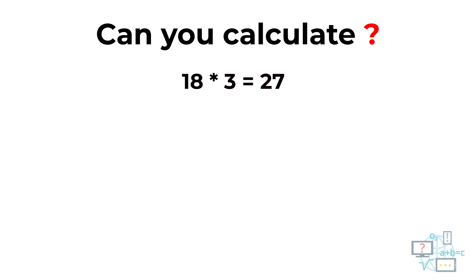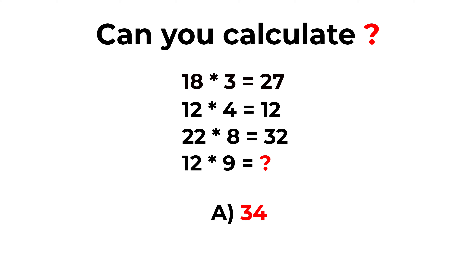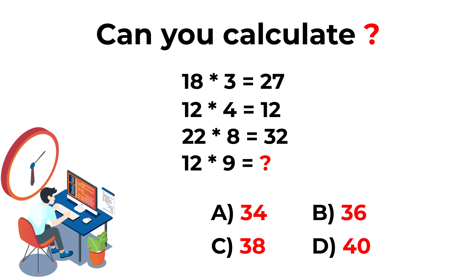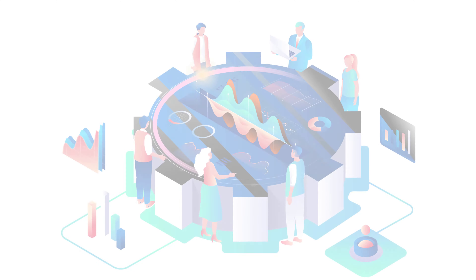Here's an interesting problem from the real test. You're presented with three expressions: 18 × 3 = 27, 12 × 4 = 12, 22 × 8 = 32. You need to calculate the missing number in the expression 12 × 9. Choices: A is 34, B is 36, C is 38, D is 40. Hint: take a look and see why there's always a two-digit number multiplied by a one-digit number — how can you use that to your advantage?